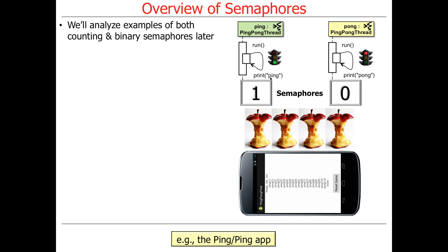This is a good example of something alluded to earlier: if you don't follow the protocol, your program will not work. If one thread decides not to acquire its semaphore and just writes ping, it's chaos and insanity — it will break out and be incorrect. So you have to make sure you follow the rules.